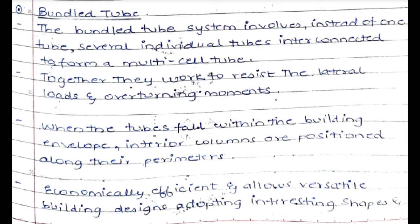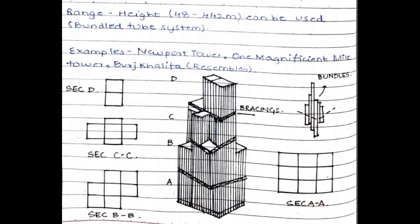Next, the bundled tube. Instead of one tube, several individual tubes are interconnected to form a multiple-cell tube or bundled tube. Together they are more efficient to resist the lateral load and the overturning moment. Economically, the bundled tube system is very efficient and allows adoption of different interesting shapes. The range is from around 40 meters to 450 meters in height. Real-life examples include the Newport Tower, One Magnificent Mile Tower, and Burj Khalifa.